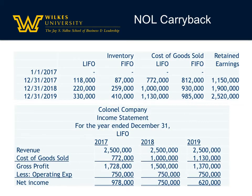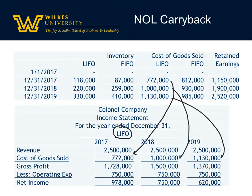Here is our income statement. Make sure when you're setting yours up that you identify that this is the LIFO one so you don't get confused about which is which. We're not really worried about the inventory changes themselves because those have flowed through to cost of goods sold. We take the cost of goods sold for each year: $772,000, $1,000,000, and $1,130,000 — subtract out the same operating expenses — and we end up with net income for the years 2017, 2018, and 2019.